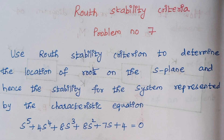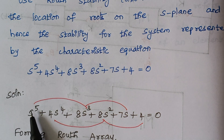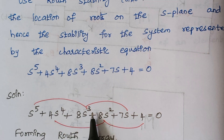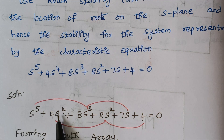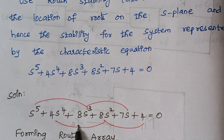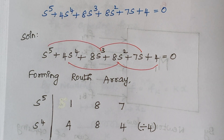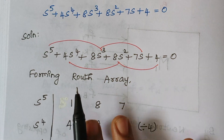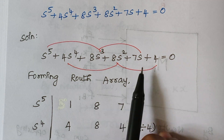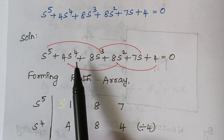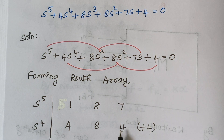The first step is forming the Routh array. Here the maximum power is 5, which is an odd number. So the first step is to select all the odd powers together: S⁵, S³, and S¹. The next step is even powers: S⁴, S², and S⁰. The coefficient of S⁵ is 1, S³ is 8, S¹ is 7, coefficient of S⁴ is 4, S² is 8, and S⁰ is 4.